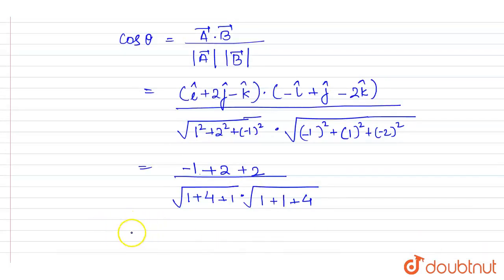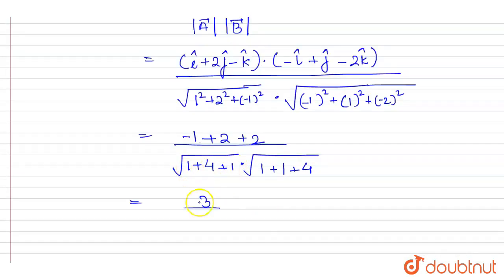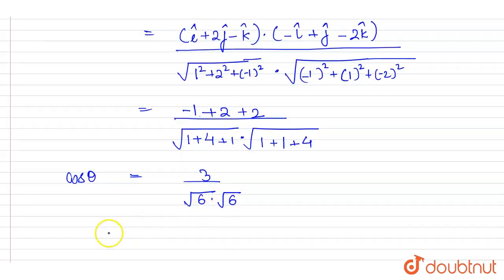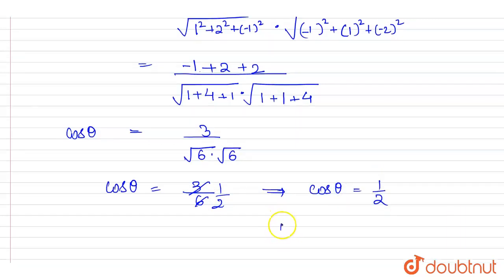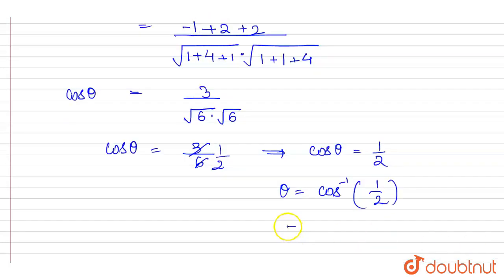So cos theta equals (minus 1 plus 2 plus 2) divided by root 6 into root 6, which gives cos theta equals 3 divided by 6, that is 1 by 2. Therefore theta equals cos inverse of 1 by 2, which equals 60 degrees. So 60 degrees is the angle between vector a and vector b.